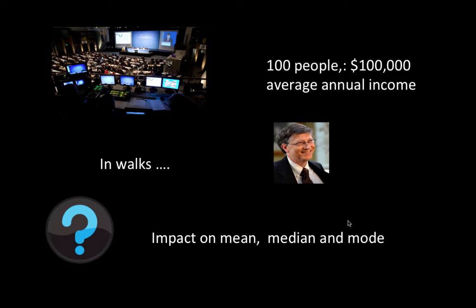However, an outlier has very little impact on either the median or the mode. The median is the middle value, and if you add one more person the middle value may shift only slightly — from $100,000 to maybe $105,000 — or it may not change at all, because many people share that middle-value income. This is why when governments report statistics like household incomes, they report median household income rather than mean household income, so that outliers don't distort the value.